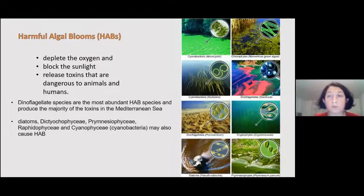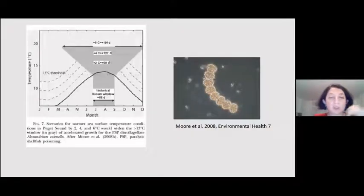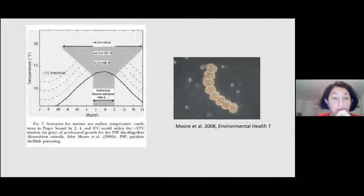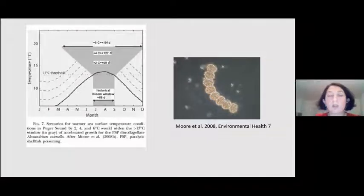Harmful algal blooms is the increase of one kind of phytoplankton in a way that they deplete the oxygen, block the sunlight, and they may release toxins that are dangerous to animals and humans. In the picture, you can see Alexandrium catenella, which usually has a bloom day of 60 days. However, with the temperature increase, their bloom time increased to over almost 200 days. So this will increase their abundance and increase the frequency of bloom times.